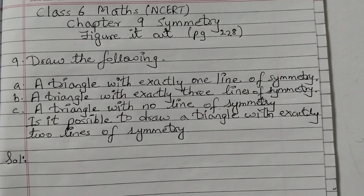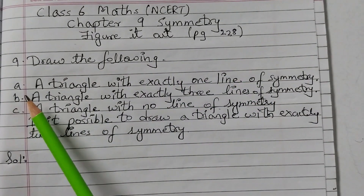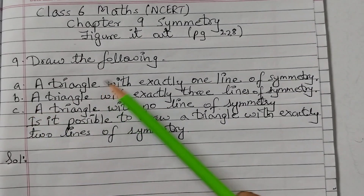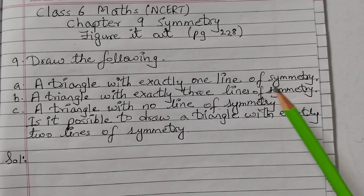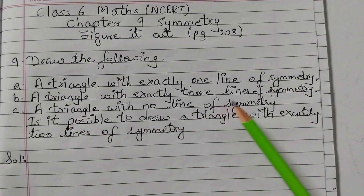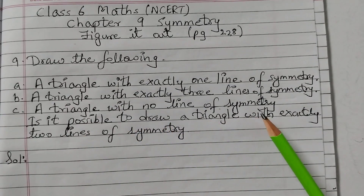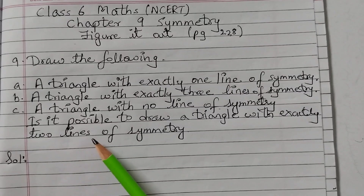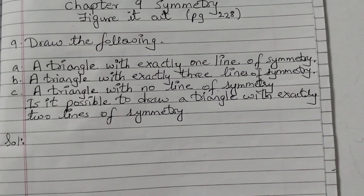Hello students, welcome back to Rosymath's class. Today we shall solve a problem from chapter number 9, symmetry, figure it out, page number 228 and that's question number 9. Draw the following: a triangle with exactly one line of symmetry, a triangle with exactly three lines of symmetry, a triangle with no line of symmetry, and the last part is: is it possible to draw a triangle with exactly two lines of symmetry? So let's get started.